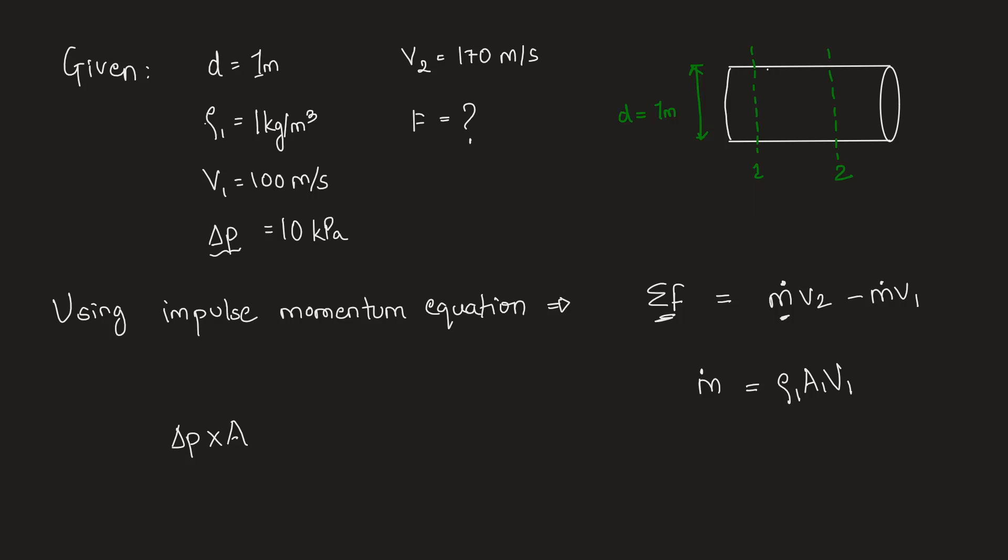This is one force, it will be in the forward direction in the direction of the flow while the force that we need to find out will be in the opposite direction so we will write it as minus F. F is the unknown force that we need to find out. This will be equal to rho 1 into A1 into V1, so this M dot is taken common, in bracket it is V2 minus V1.